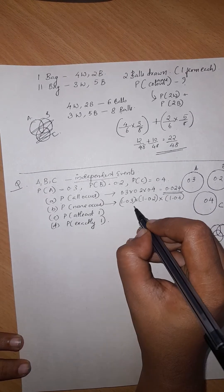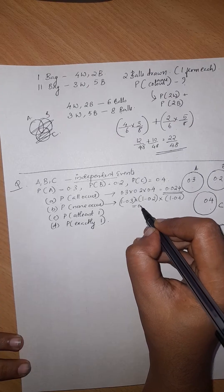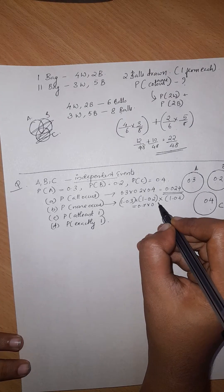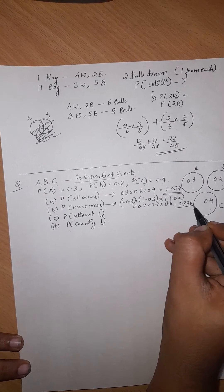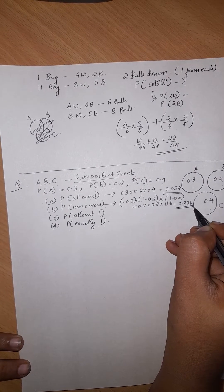0.7 into 0.8 into 0.6, that is 0.336. These are all independent events. This is a special case.